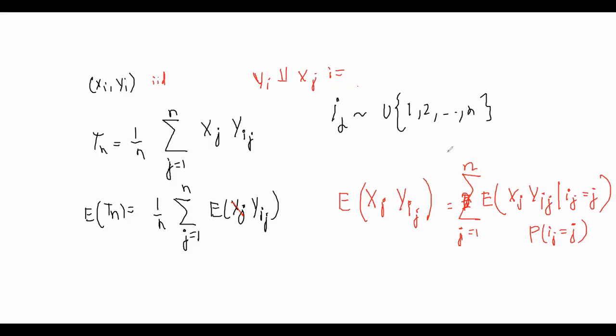Whether i_j equal to j, into probability of i_j equal to j. Now we will take the summation over all the probabilities, 1 to m, so this is the basic idea. So now we know this follows uniform, discrete uniform. So therefore it turns out, it's summation of k from 1 to N, (1/N) expectation X_j Y_k into probability, which is 1/N.